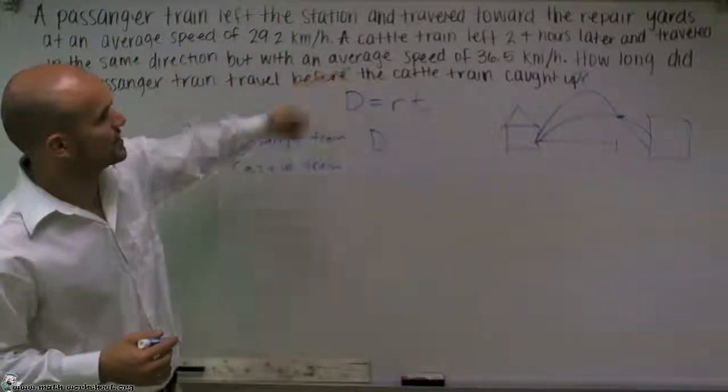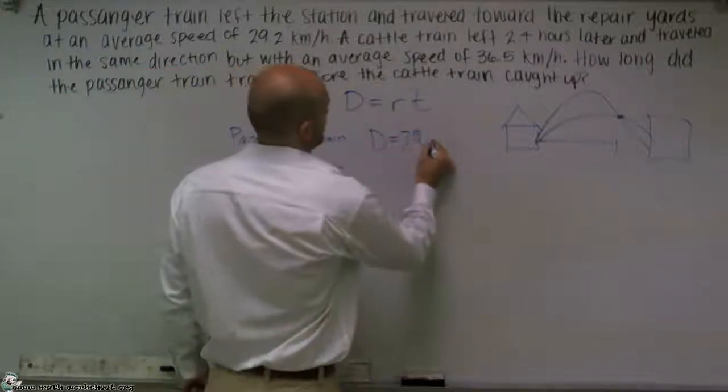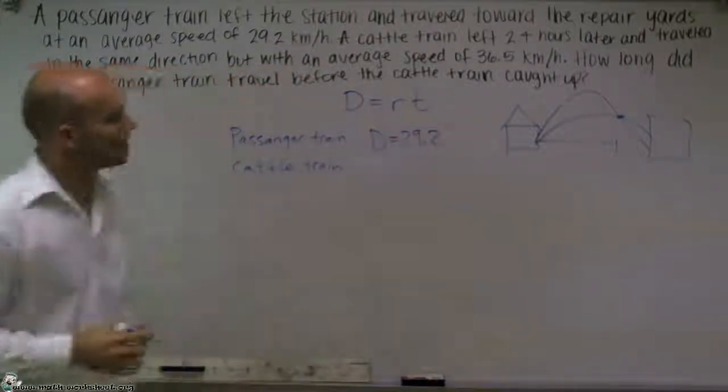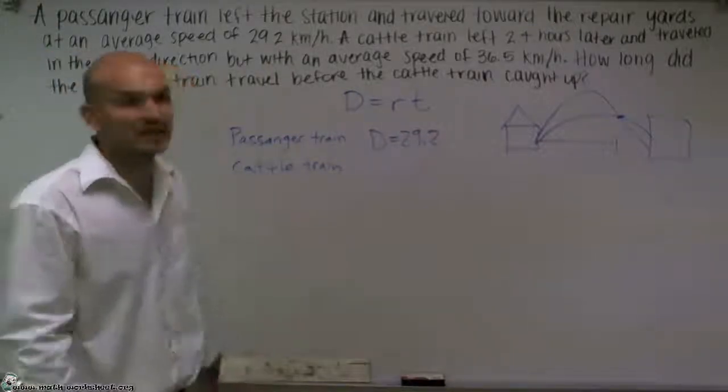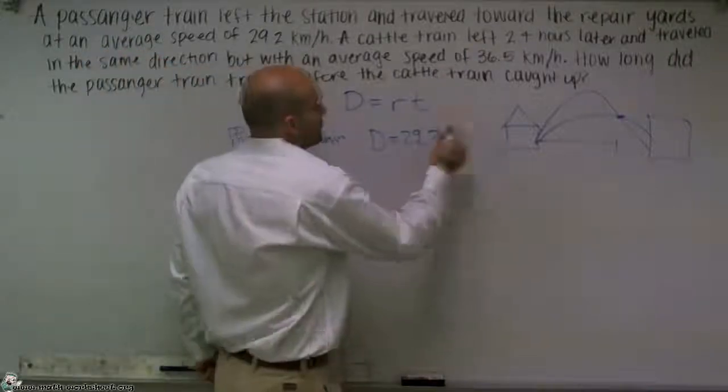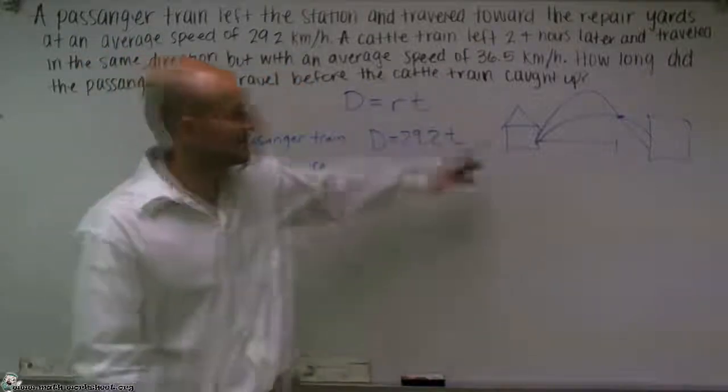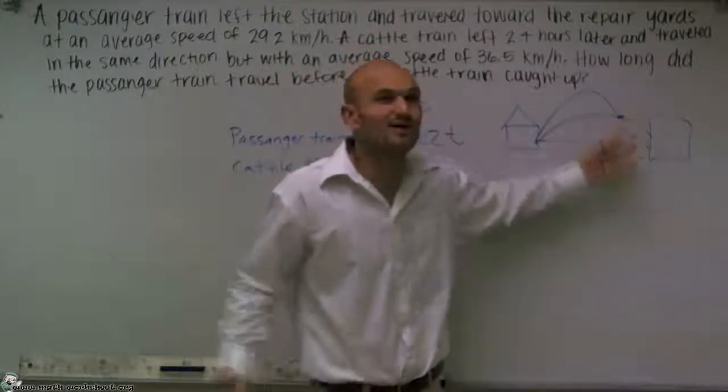Then the passenger train said it traveled at 29.2 kilometers per hour. And then it says the time, but we don't know exactly what the time is. So again, we have another unknown variable, which is T, because we know they traveled a certain distance, which we don't know, and they crossed, but we don't know how long it took them.